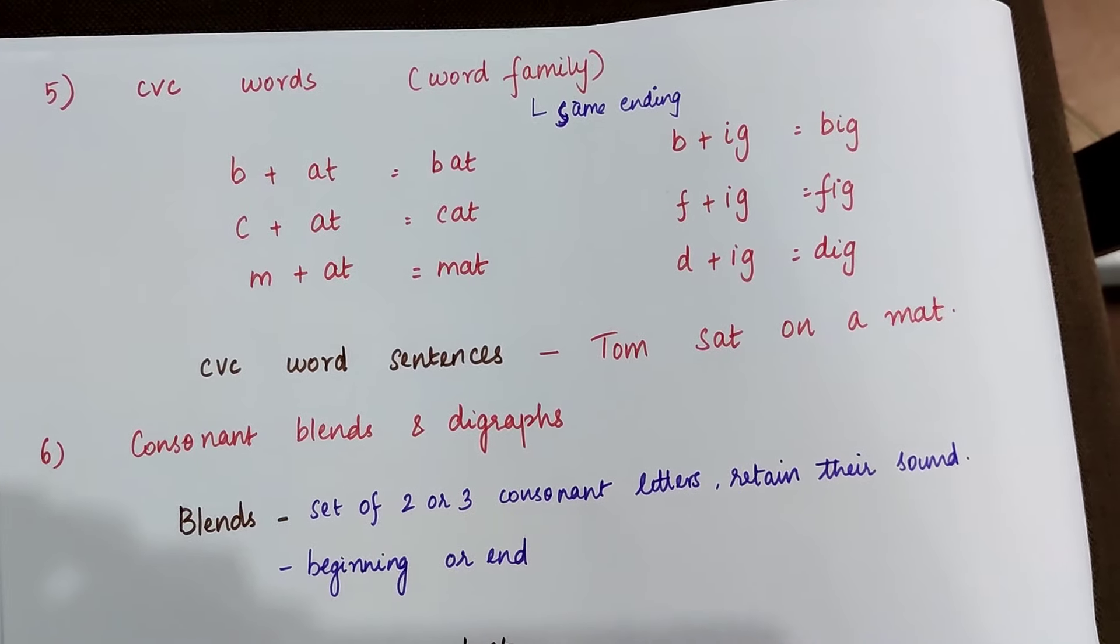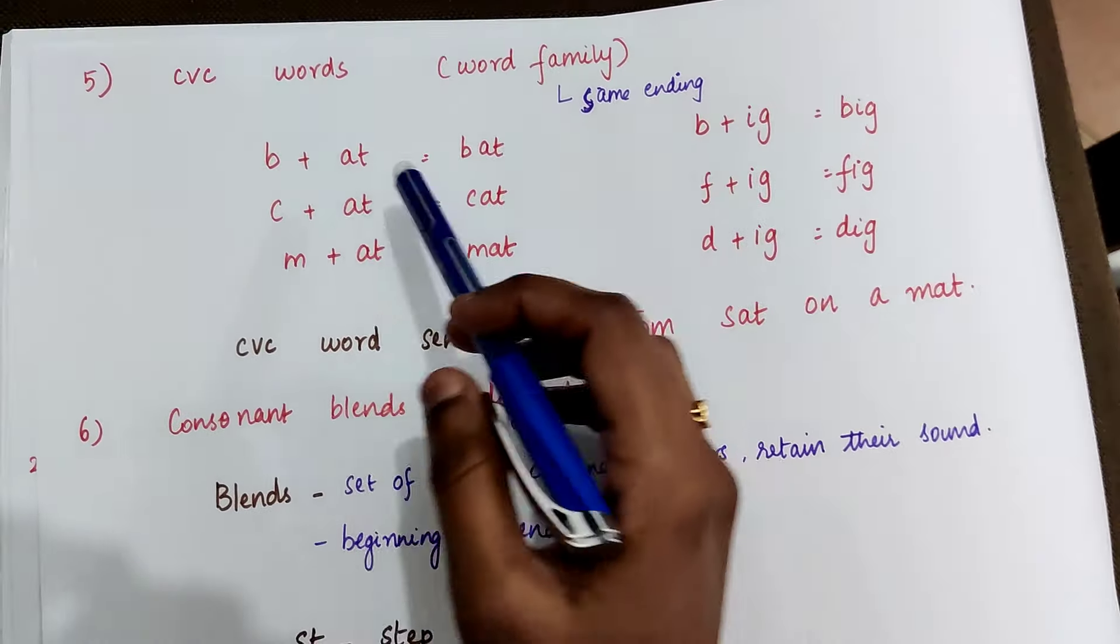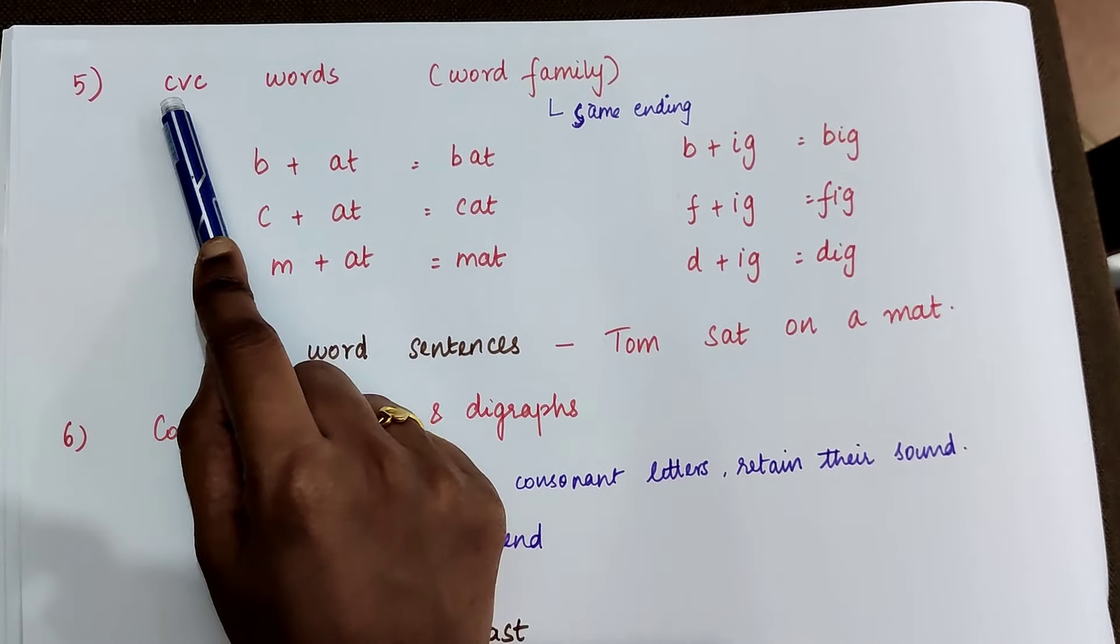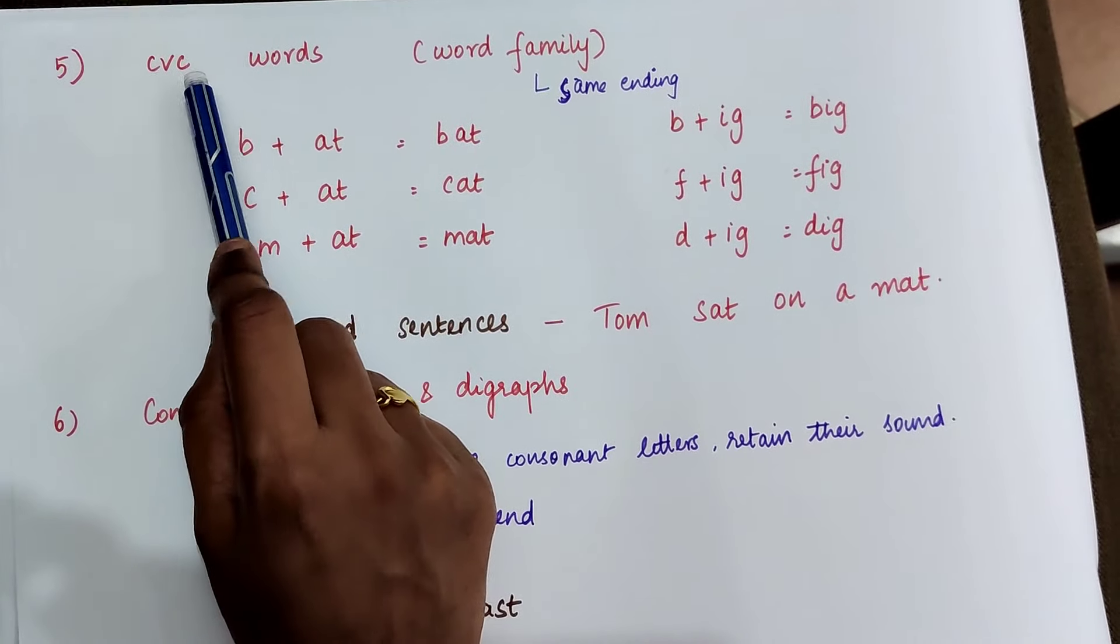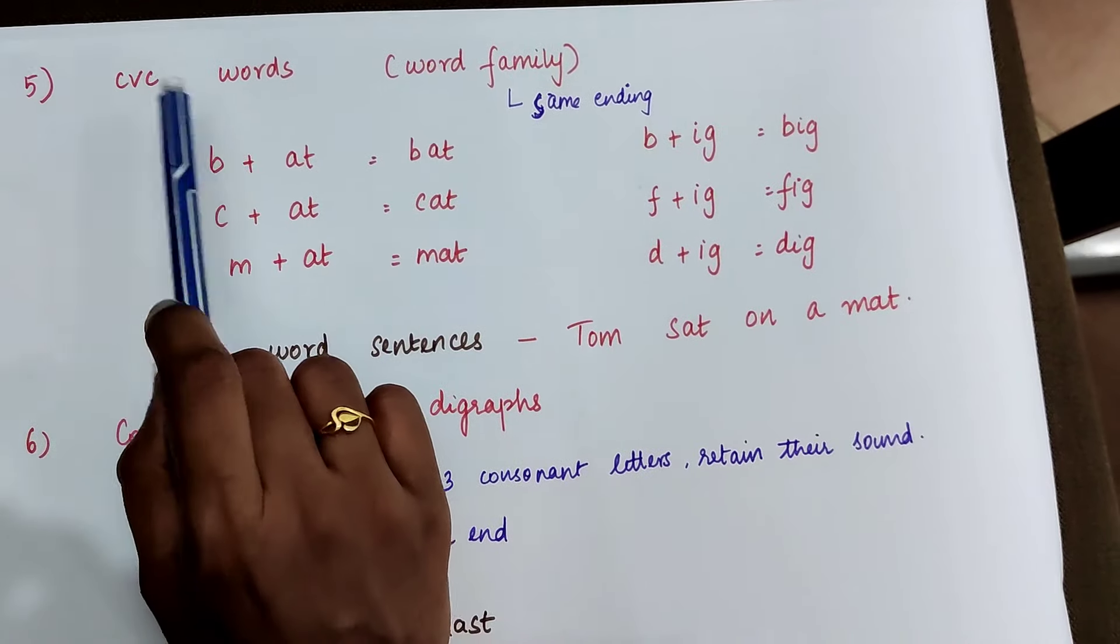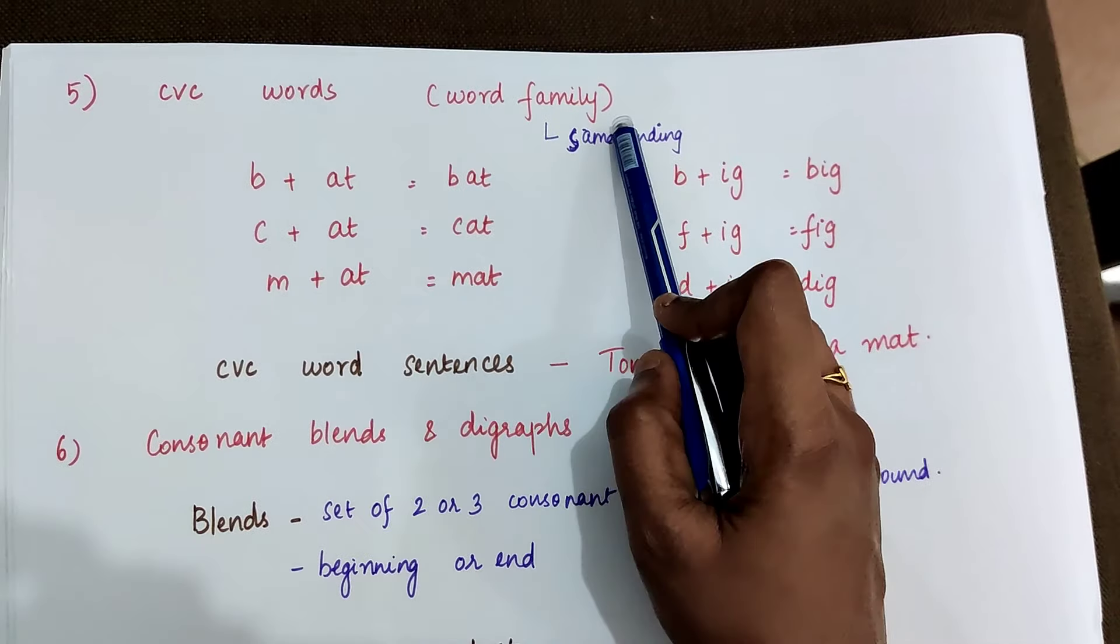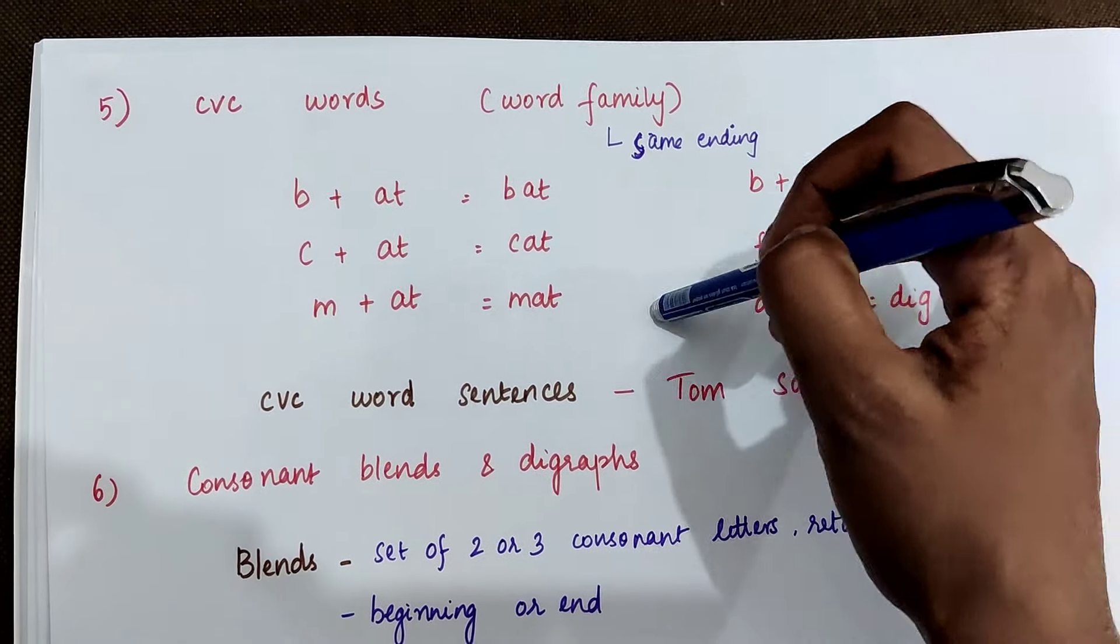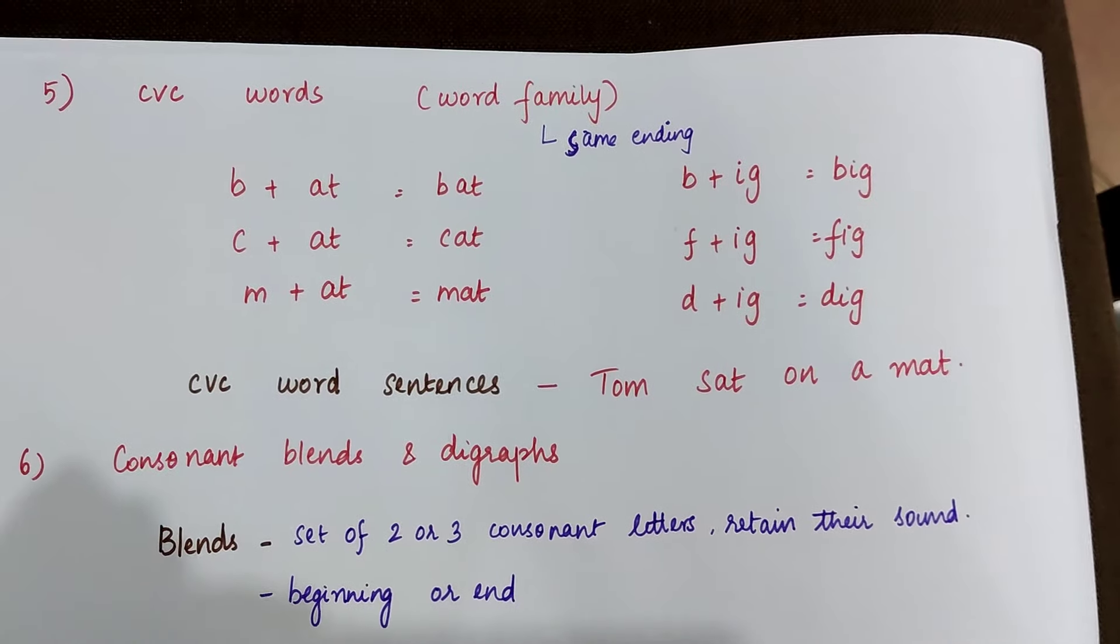So the next step is teaching a child to read CVC words. CVC words are three letter words that has a consonant in the beginning, a short vowel in the middle, and a consonant at the end. So an easier way to familiarize the child with CVC words is using word family. In word family, all the words have the same ending.